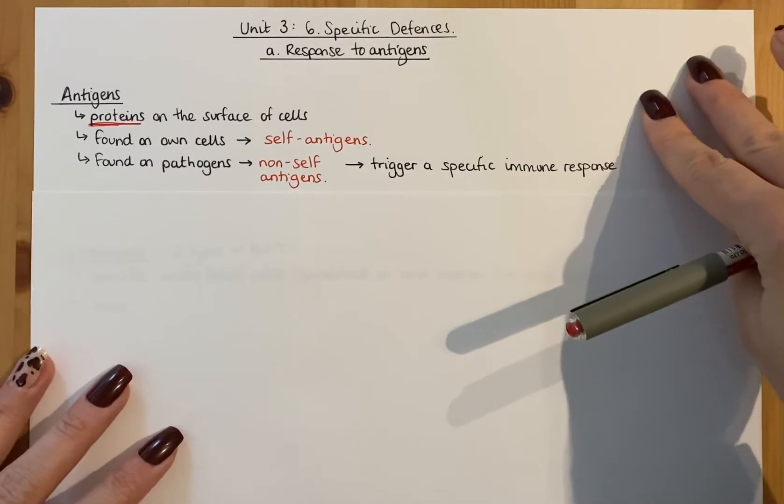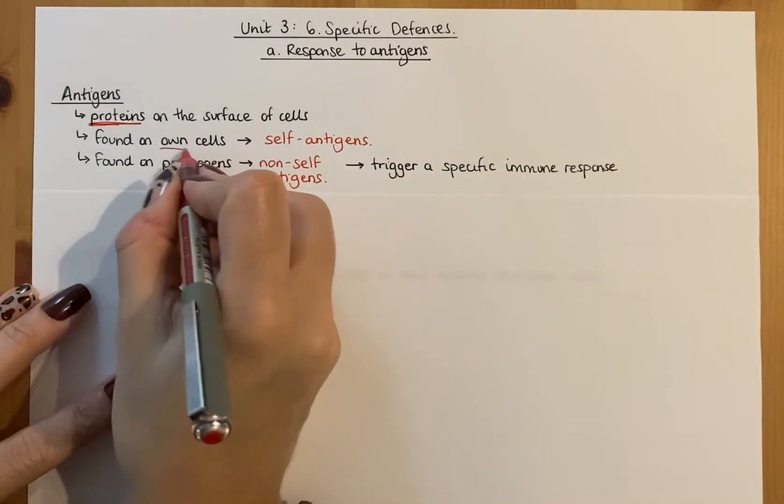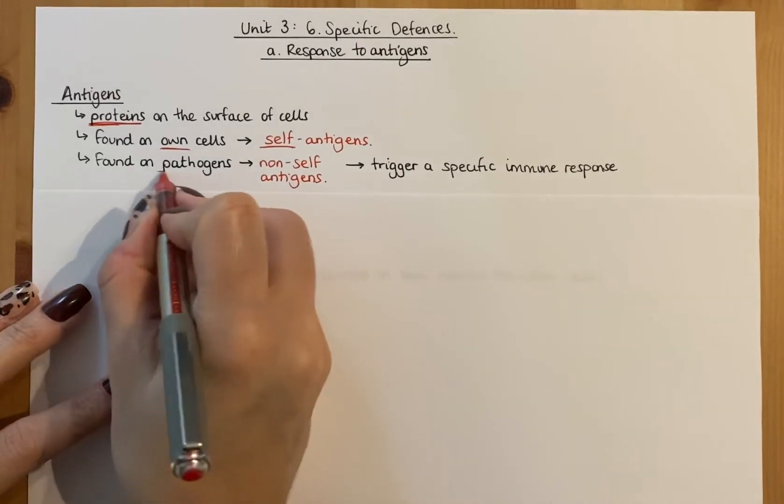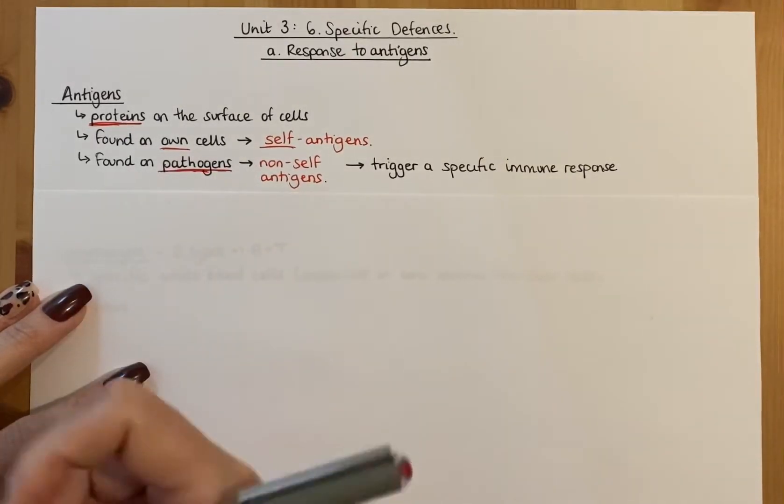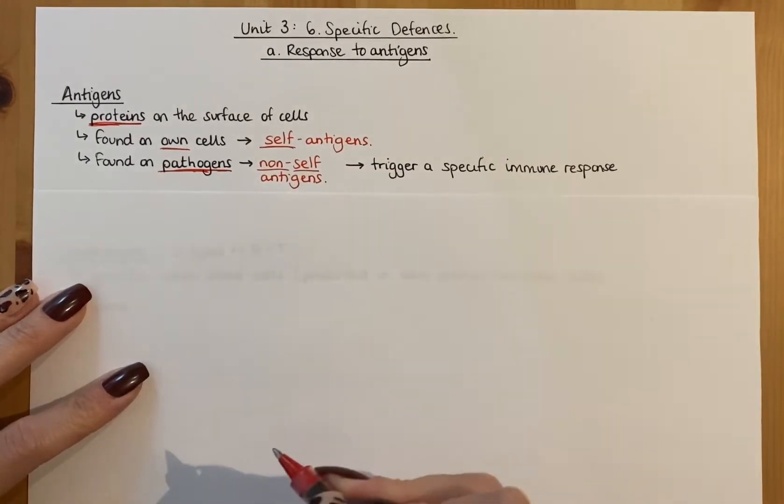So I'm going to show you a diagram in a minute but I just want to give you a general introduction to what this stuff is first. So when it's on your own cells they're self-antigens and it's important to recognize your own ones. And when it's on pathogens, foreign pathogens, these antigens on foreign pathogens, they're non-self.